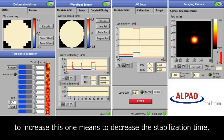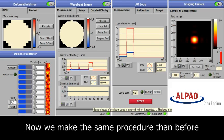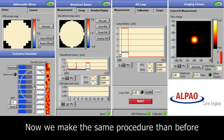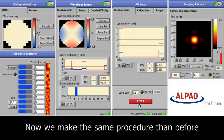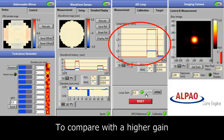Now we apply the same example as before to compare the loop with the higher gain. As we can see on our loop monitor, the mirror performs the correction much faster.